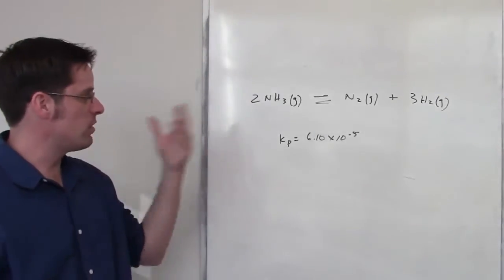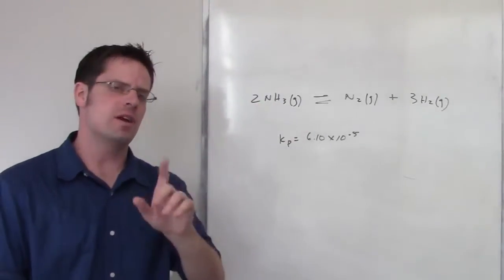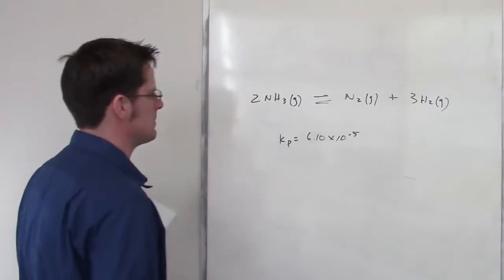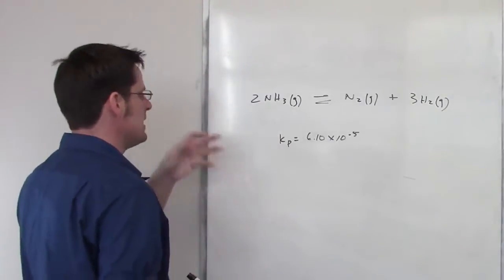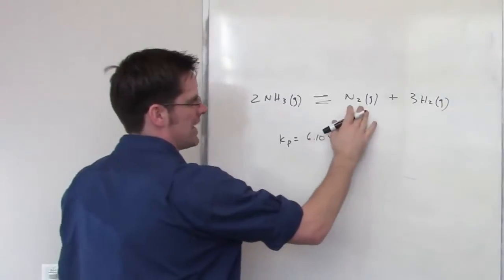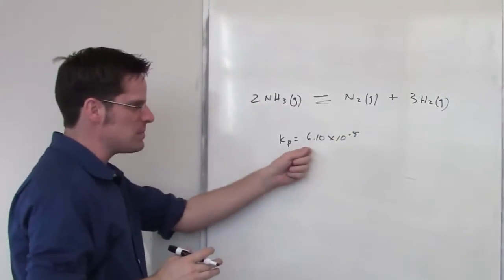This is an important question involving this very important reaction, the very one that is used in the Haber process that we talked about elsewhere. It tells me that I've got ammonia in equilibrium with N2 and H2 gases and it gives me Kp.